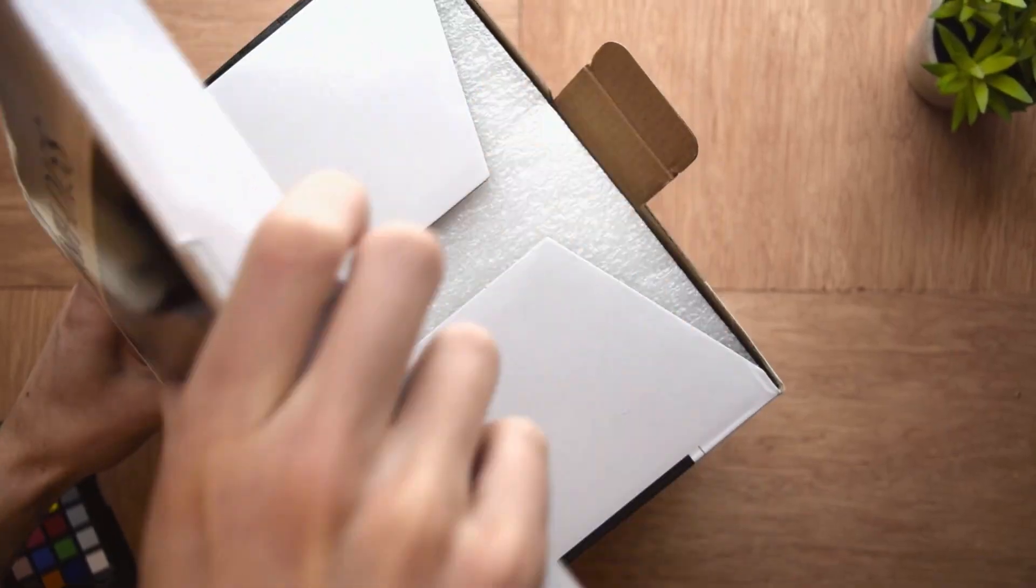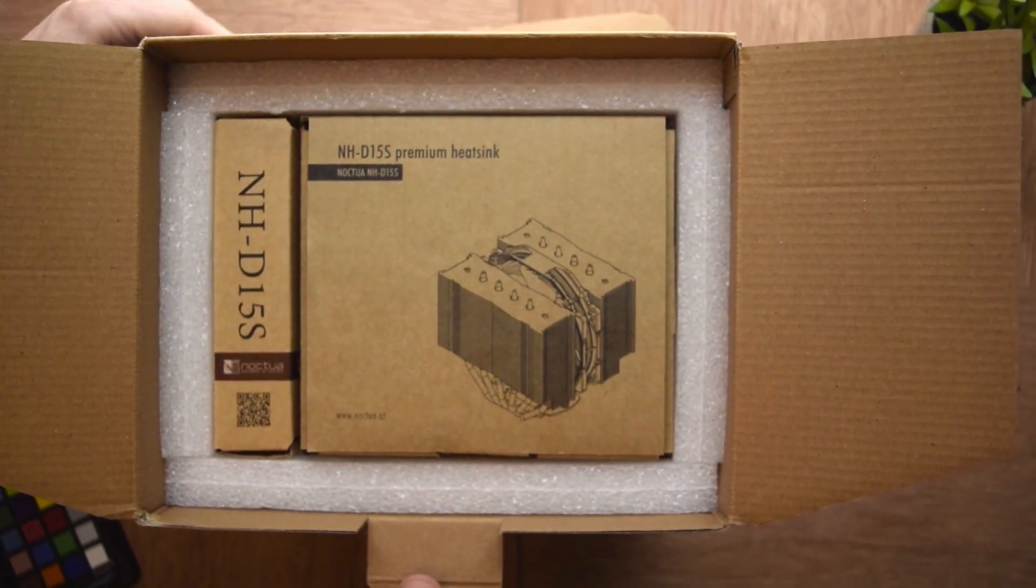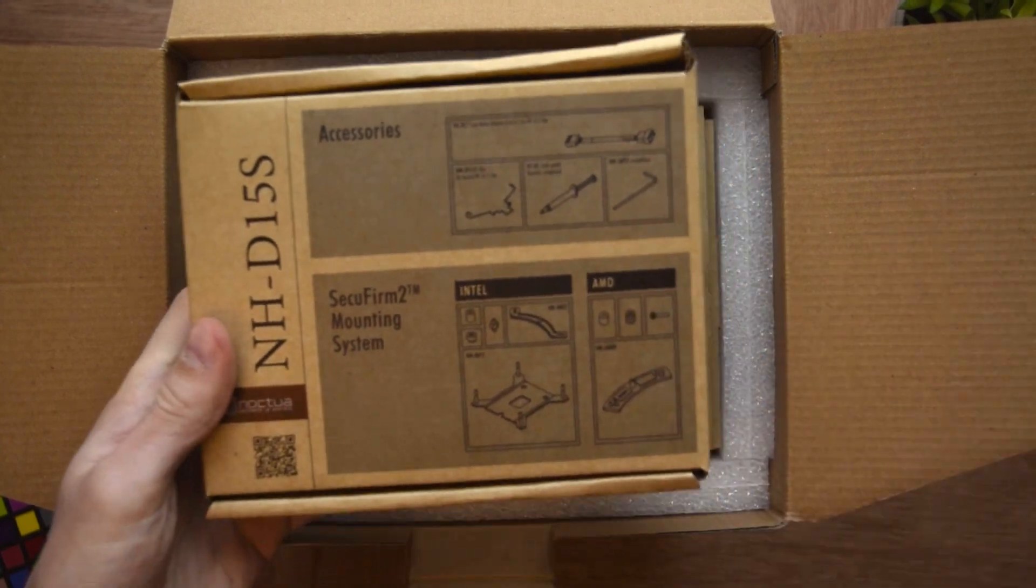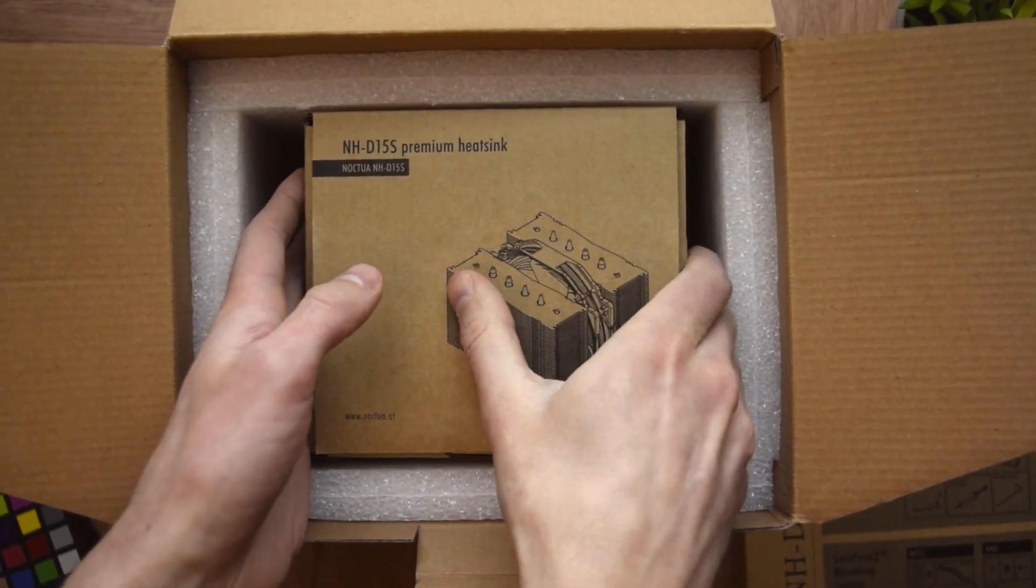The D15S is well packaged with solid foam on every side. Inside the box there are two more boxes. The smaller of the two contains instructions and mounting hardware while the larger one contains the cooler itself.